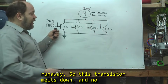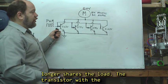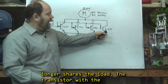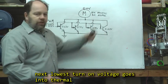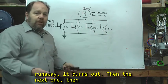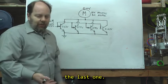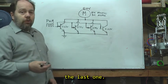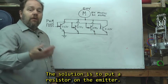So this transistor melts down, no longer shares the load, the transistor with the next lowest turn on voltage goes into thermal runaway, it burns out, then the next one, then the last one. The solution is to put a resistor on the emitter.